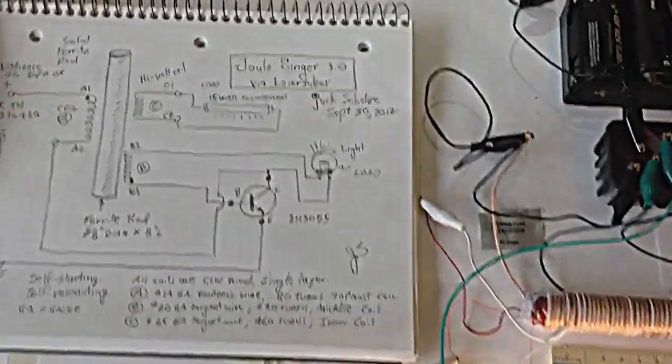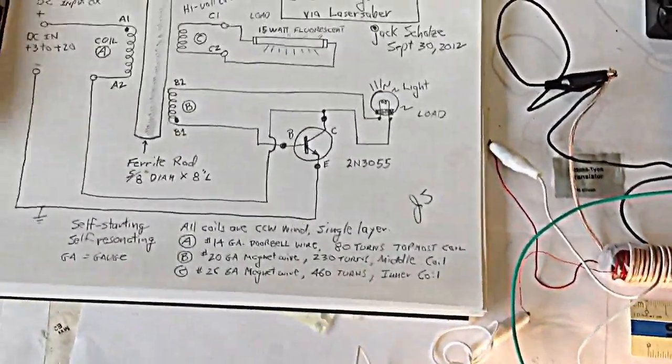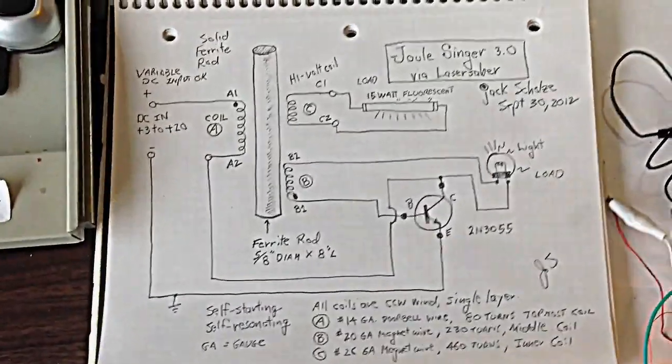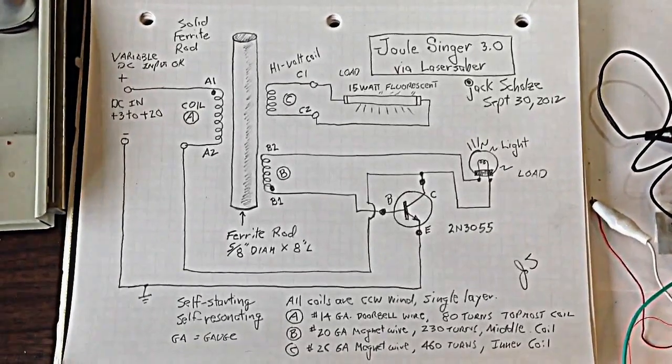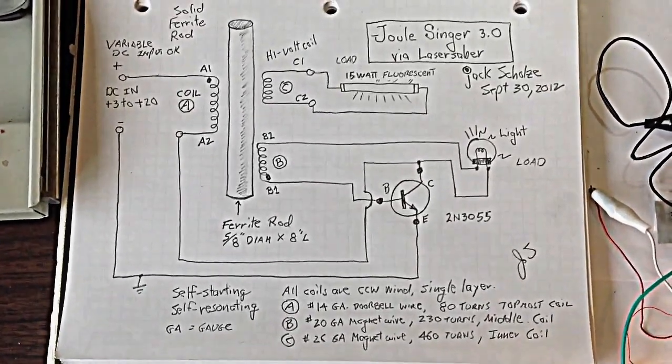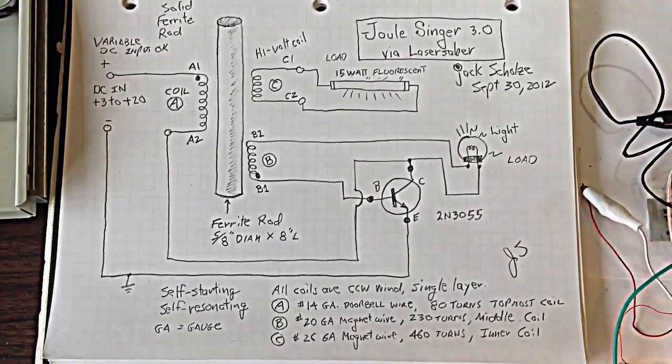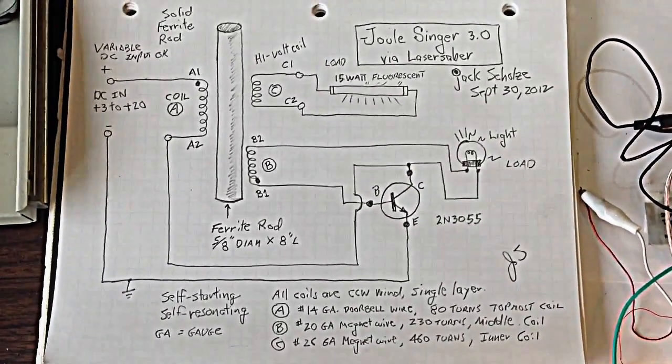It accepts various kinds of DC input, which is very nice. And here is a schematic diagram. You can see you can have variable DC in, and there is that 8-inch ferrite rod that I ordered through the internet.